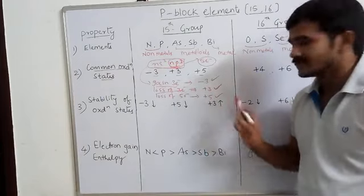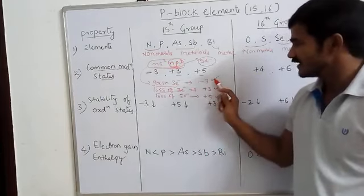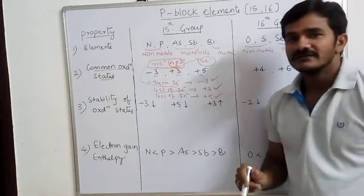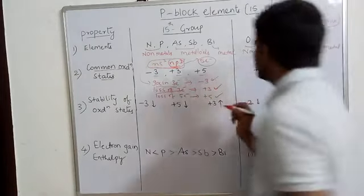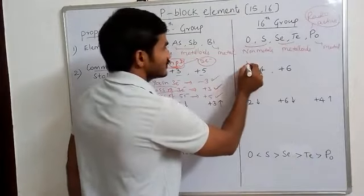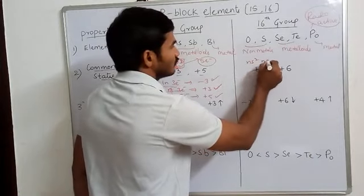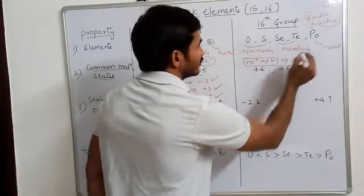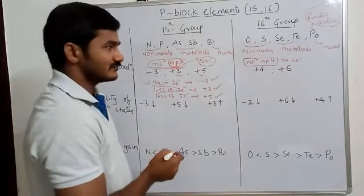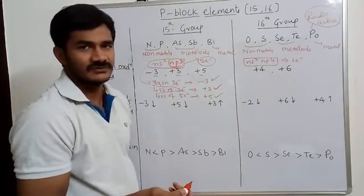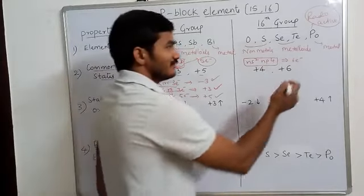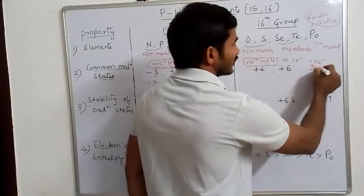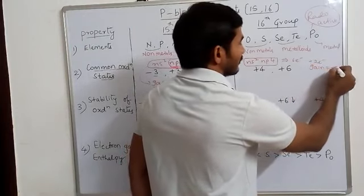So minus 3, plus 3, and plus 5 are common oxidation states of Group 15 elements. Coming to Group 16, the outermost configuration is ns²np⁴, which has 6 electrons total. To get stability it needs to gain 2 electrons, giving minus 2 oxidation state.